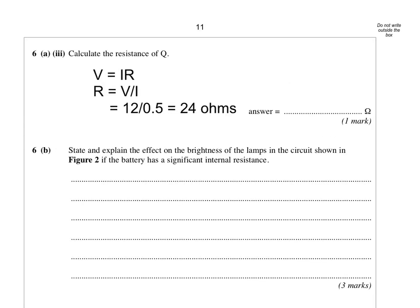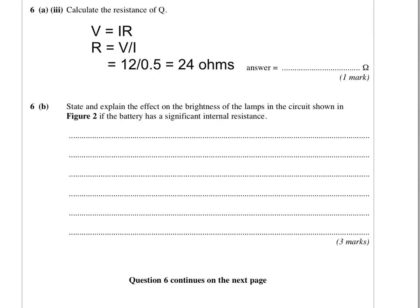The next part is very similar: calculate the resistance of Q. From the previous page, the voltage across Q was 12 volts, and the current through Q was half an amp. So 12 divided by 0.5 gives us an answer of 24 ohms.